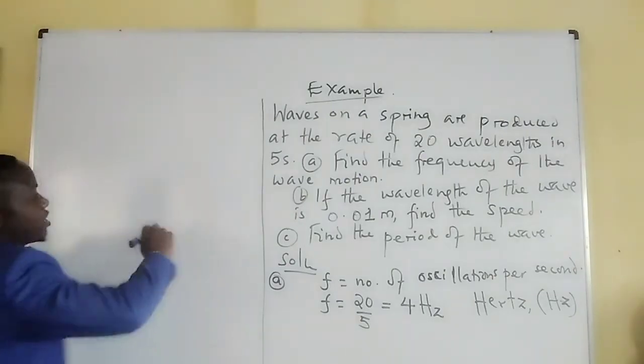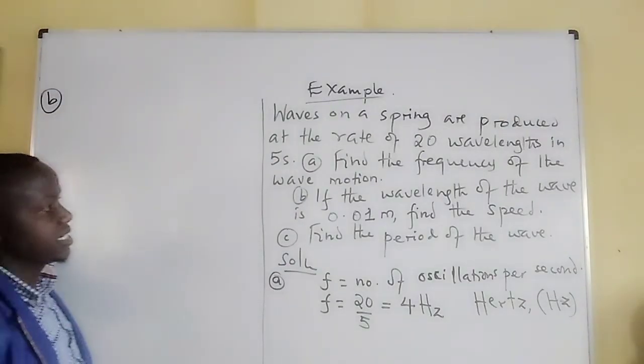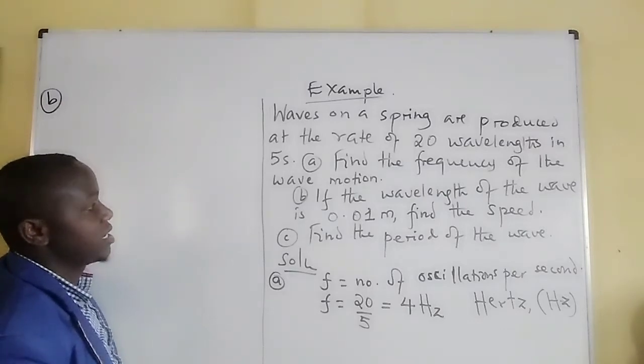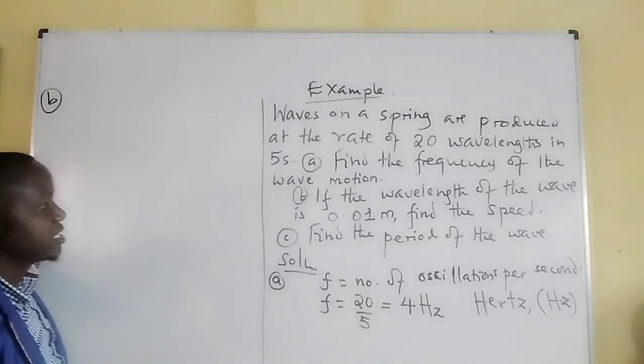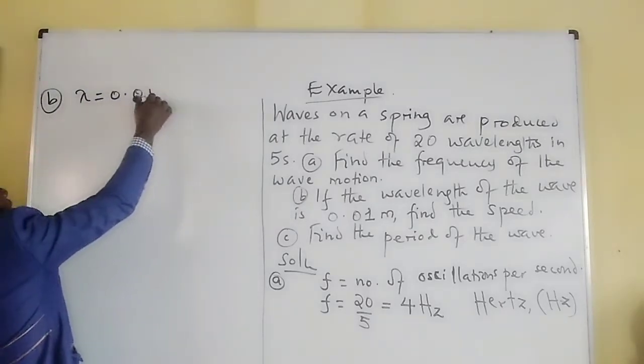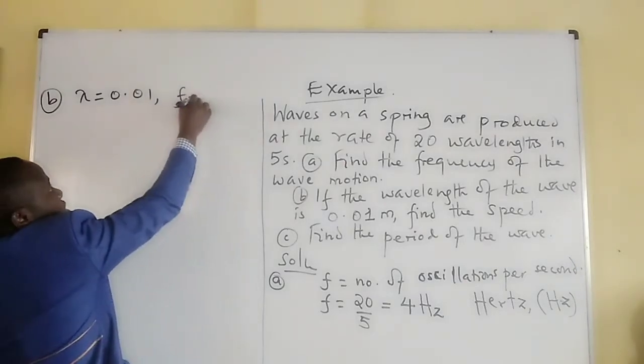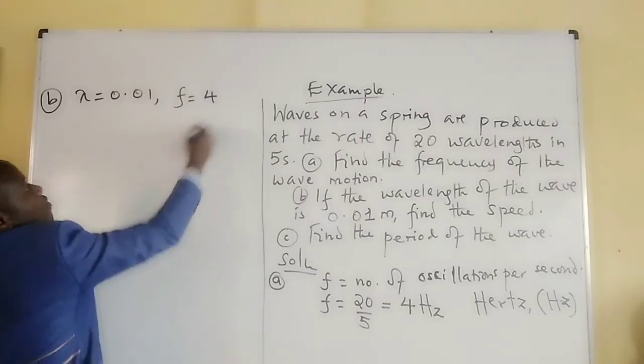Now we can go to Part B, whereby we find the speed. We are given wavelength to find speed. So wavelength is 0.01, and we are getting frequency as 4. We want v.